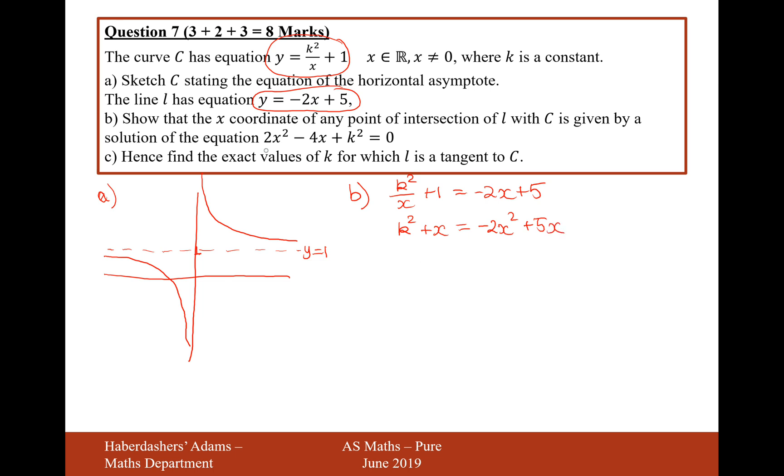Let's move everything now onto the left-hand side. So it'll be 2x squared and then it'll be minus 4x and it'll be plus k squared. There we are.